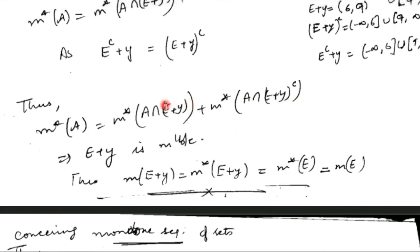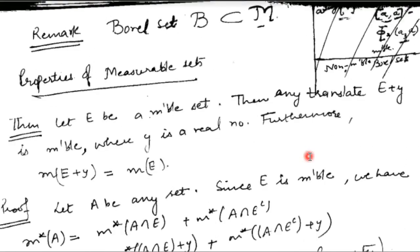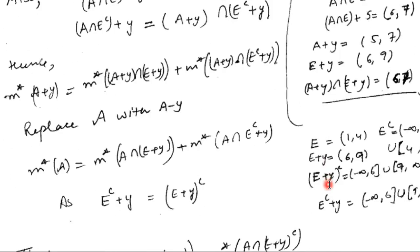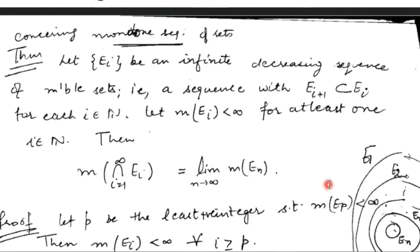From this equality, by the definition of measurability, E plus y is measurable. Further, since the outer measure satisfies the translation invariant property, the outer measure of E plus y equals the outer measure of E. Since E plus y is measurable, we can replace outer measure with simple measure m. This completes the proof that whenever E is measurable, its translate E plus y is also measurable and the measures are equal.